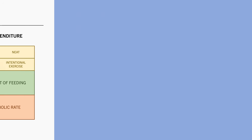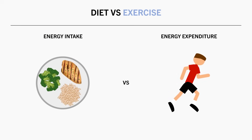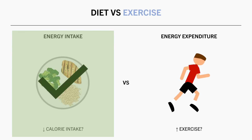So there are two sides to this equation: energy intake and energy expenditure. But which one should we prioritize for weight loss? Should we focus on reducing calorie intake via the diet, or should we try to increase energy expenditure via exercise? Well, both can work to some extent, but calorie restriction seems to be more effective than exercise for weight loss.